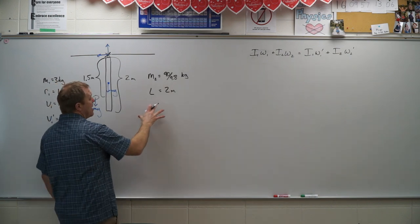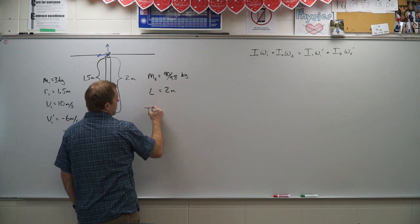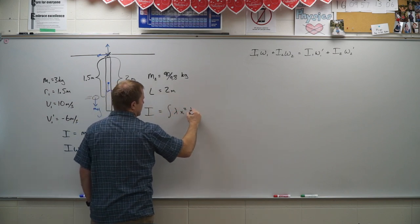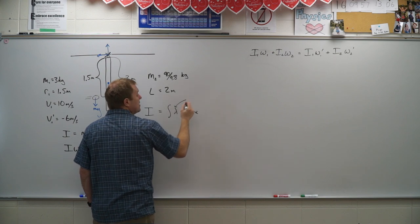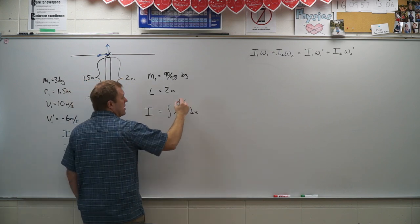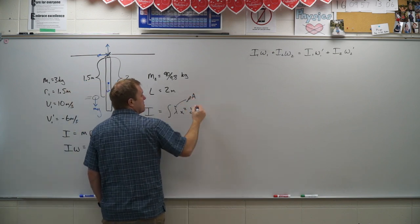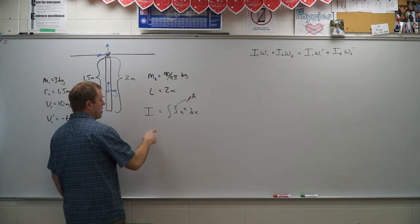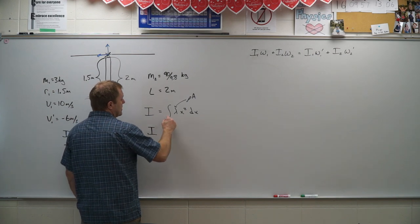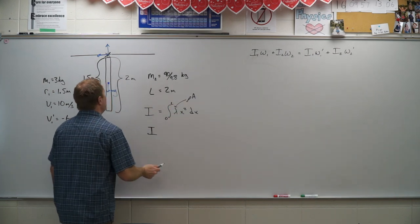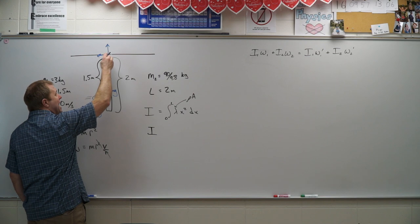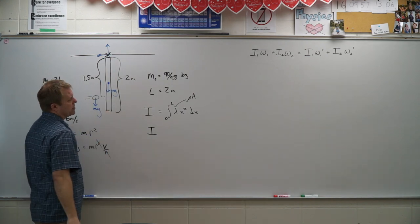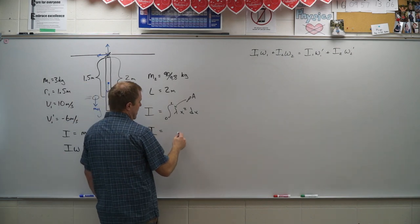Now the I value for this bar. So my I value is the integral of lambda X squared DX where lambda, since this is a uniform bar is a uniform density times a uniform cross-sectional area of whatever those two values are for this bar. I can go ahead and take that integral from zero to L, because it's about the end point. So that's where that zero, and it goes to this length L. That's where that L comes in. So I go ahead and integrate that.